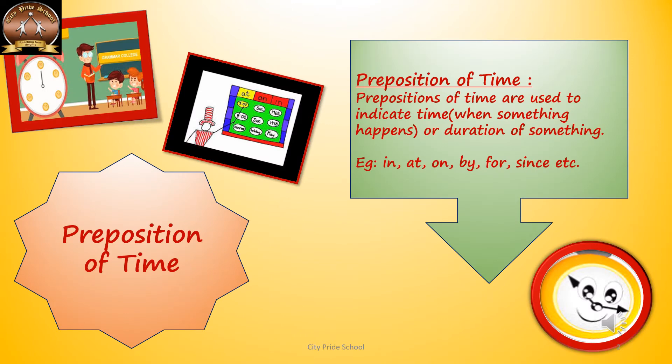What is the preposition of time? Preposition of time is used to indicate the time, like when something has happened or the duration of something. So: in, at, on, by, for, since, etc. Here we need to see that the same preposition 'in' is used as the preposition of place also and as the preposition of time also. We need to decide whether it is talking about time or place according to the sense of the sentence. Same with 'at', 'on', and 'by' also.